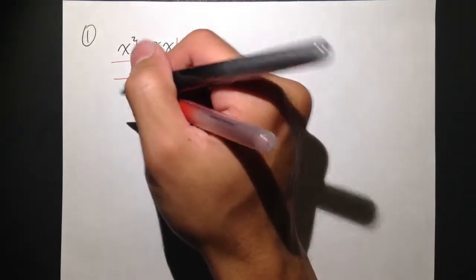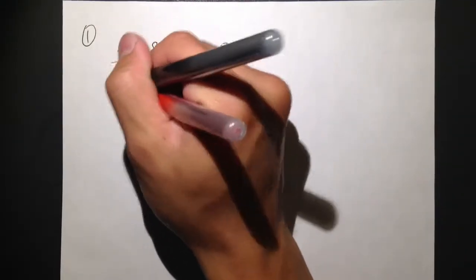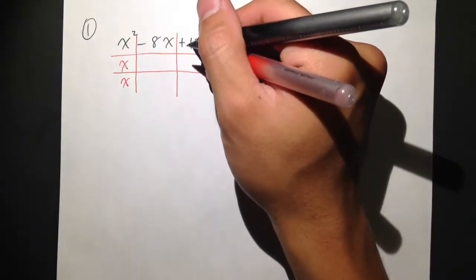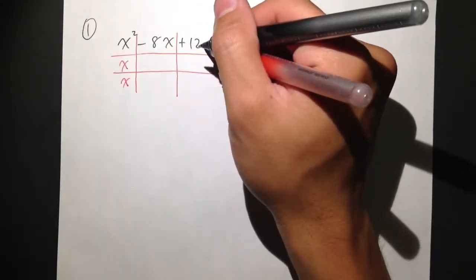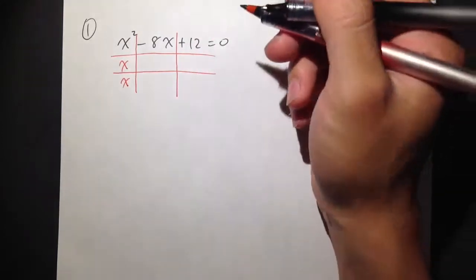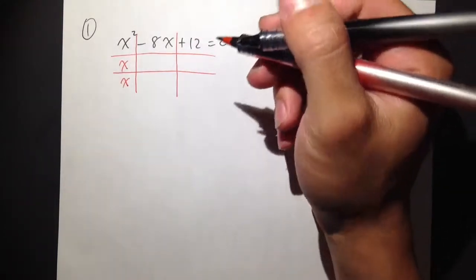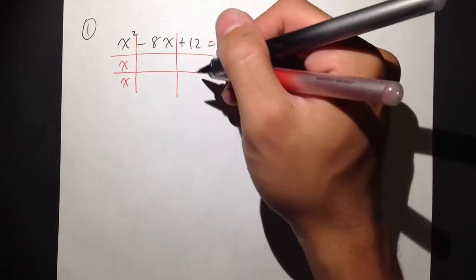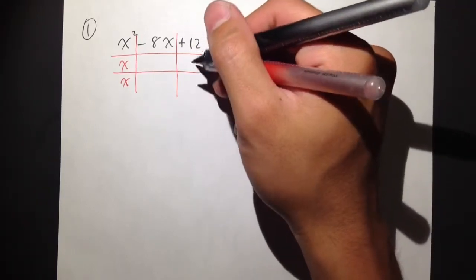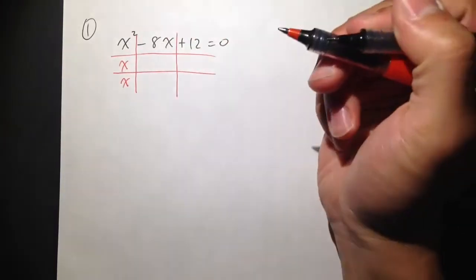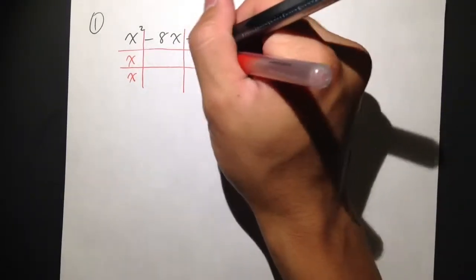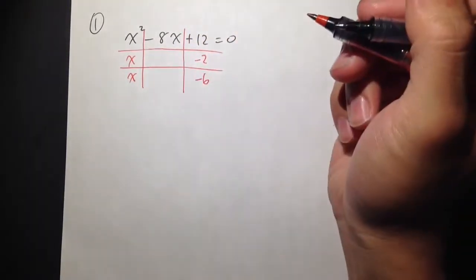Then ask yourself: what times what will be x squared? We don't have much choice — just x times x. And then to break down positive 12, you have to think about two numbers that multiply to positive 12, and when you combine those two numbers you get negative 8. The combination will be negative 2 and negative 6.